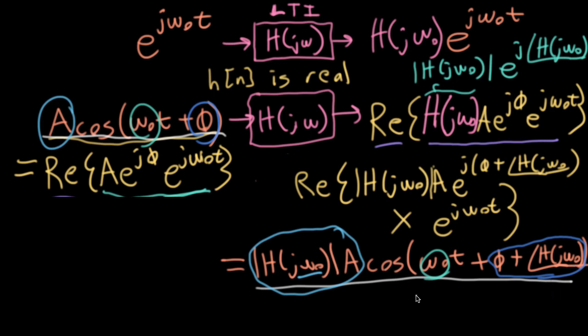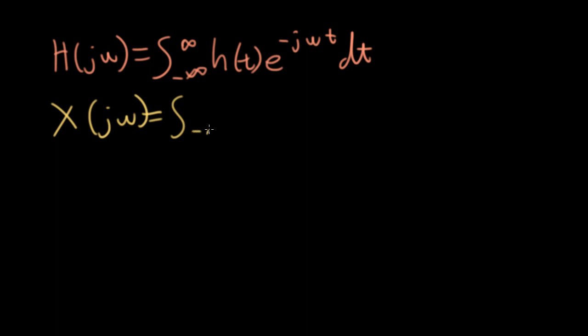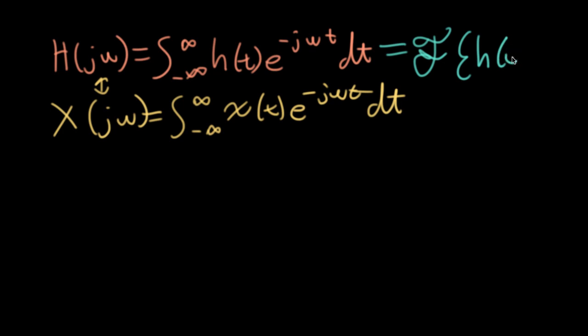We define the frequency response of a system as the integral from minus infinity to infinity of the impulse response against e to the minus j omega t dt. Not coincidentally, this looks like a generic Fourier transform, which we defined using the exact same form. So unsurprisingly, Fourier transforms and frequency responses are highly related concepts. The frequency response is really just the Fourier transform of the impulse response.